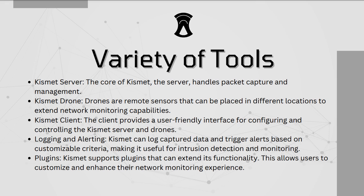Kismet also comes with a variety of tools. The most important is the Kismet server — this is the core of Kismet, handling packet capture and management. Now, remember what I said about GPS. Kismet has drones — remote sensors that can be placed in different locations to extend the working capability. You can imagine if you had a bagged drone, you could cover a small complex, a small apartment complex, an office complex — that would allow you to extend coverage and really see where all of the captured devices are located in the geographic area.